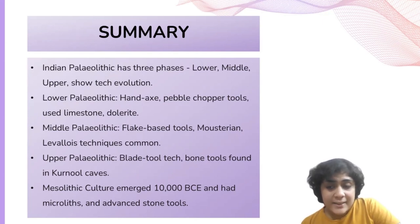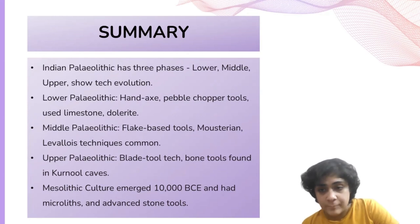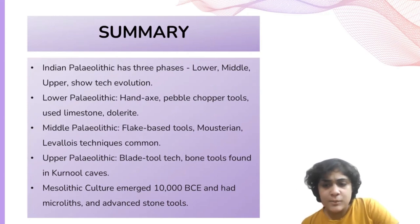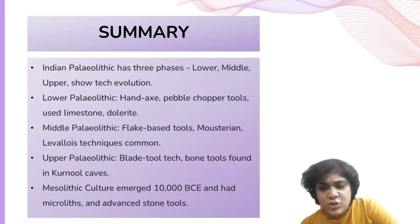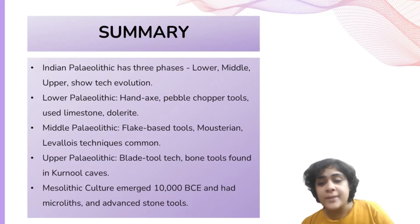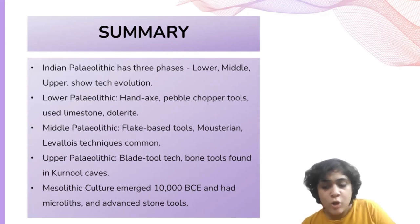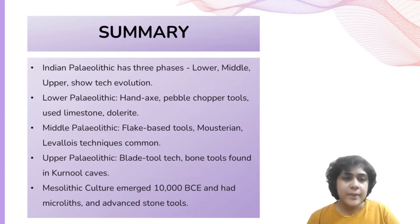The Lower Paleolithic phase is characterized by tools like hand axes and pebble chopper-chopping tools, with preferred materials including limestone, dolerite, and quartzite. The Middle Paleolithic featured a variety of flake tools crafted through specialized techniques like the Mousterian and Levallois techniques. In the Upper Paleolithic, blade tool technology predominated; additionally, bone tools have been discovered in the Kurnool caves in Andhra Pradesh. The Mesolithic culture emerged around 10,000 BCE as a post-Pleistocene culture bridging the Paleolithic and Neolithic ages, characterized by the use of microliths — small composite stone tools created using advanced techniques and fine siliceous materials.